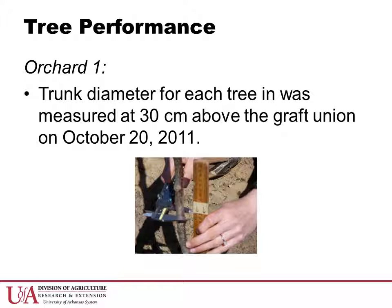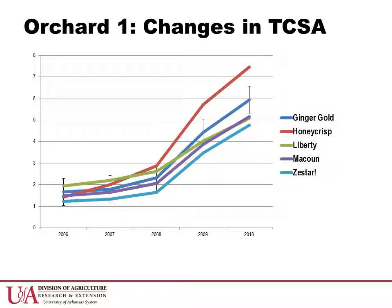Trunk cross-sectional area was a standard measurement of tree size that was assessed at the end of each growing season. From 2006 through 2008, trunk cross-sectional area was not statistically different for any cultivars. However, in 2009, Honeycrisp attained a larger trunk cross-sectional area than Zestar, and in 2010, Honeycrisp trees had a greater trunk cross-sectional area than all other cultivars except Ginger Gold. Trunk cross-sectional area is an important measurement used in comparing relative yield between different trees.